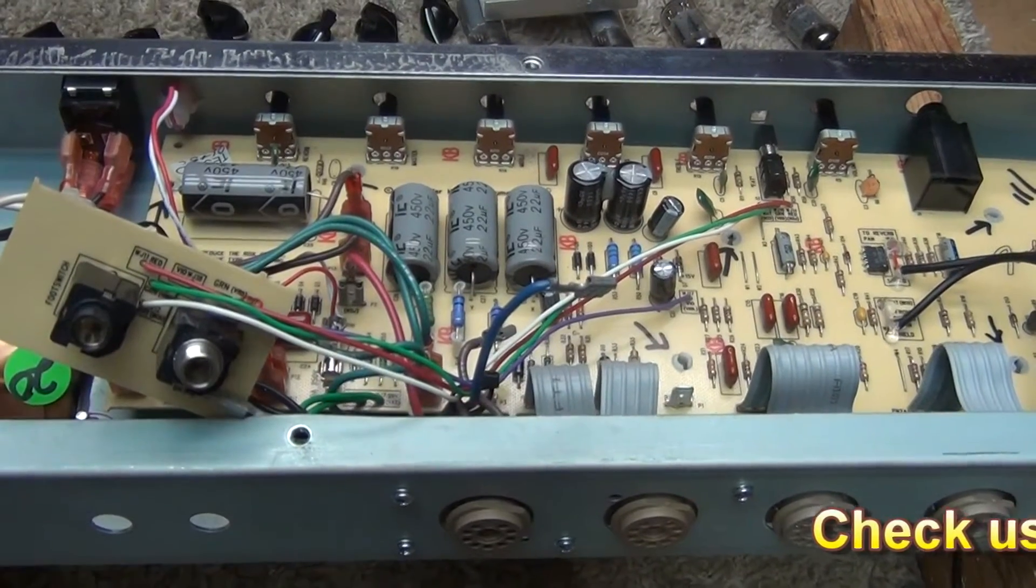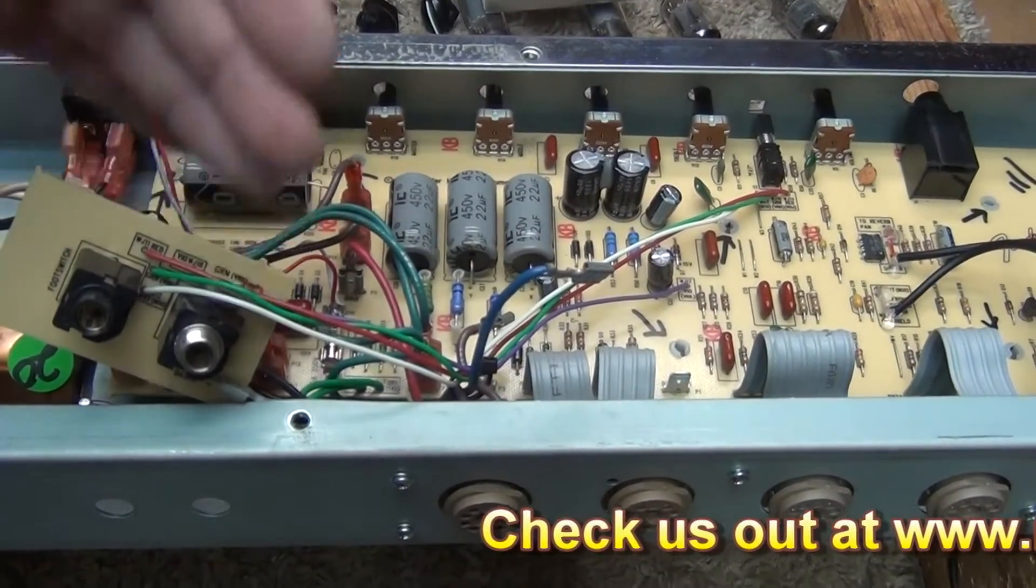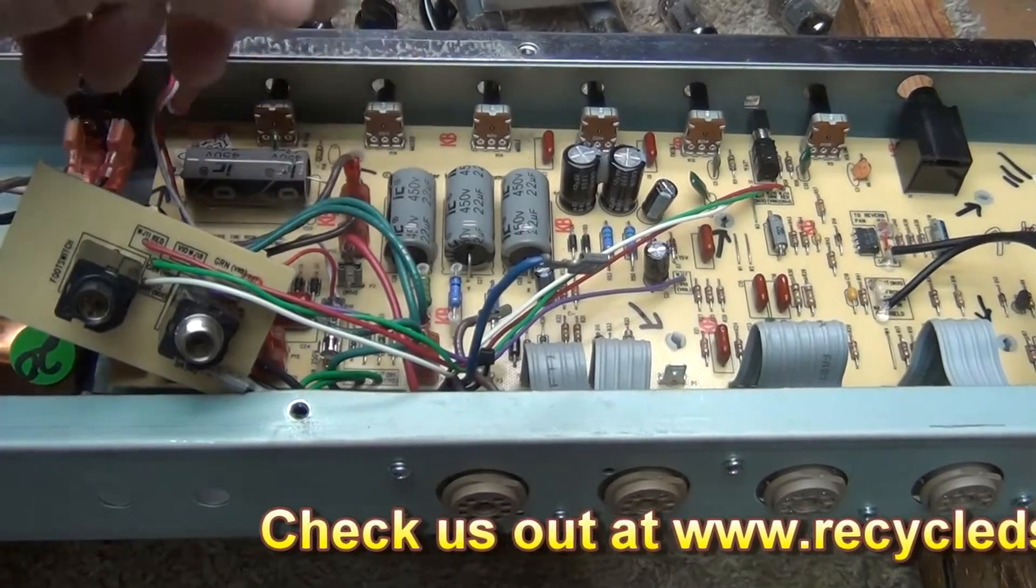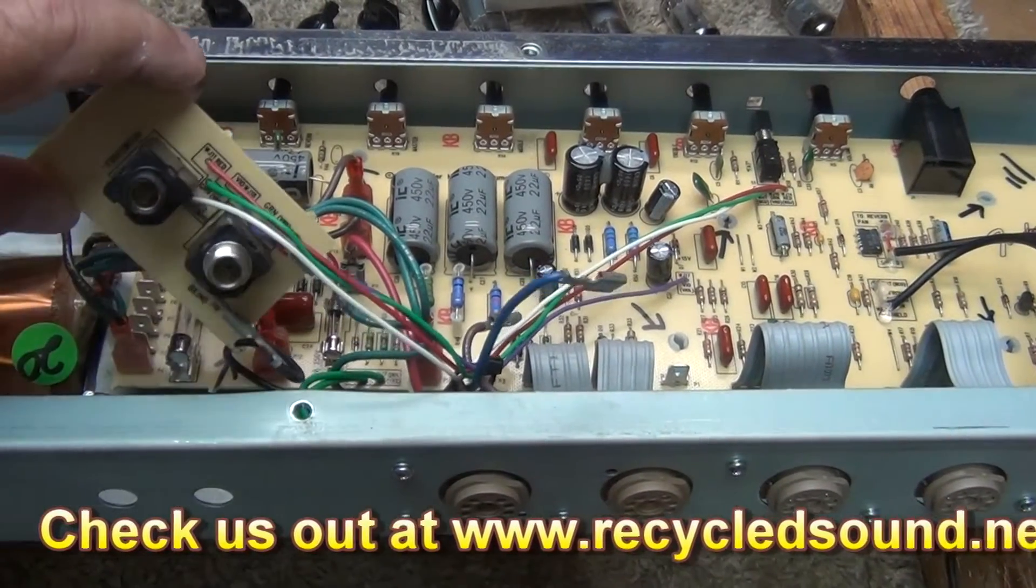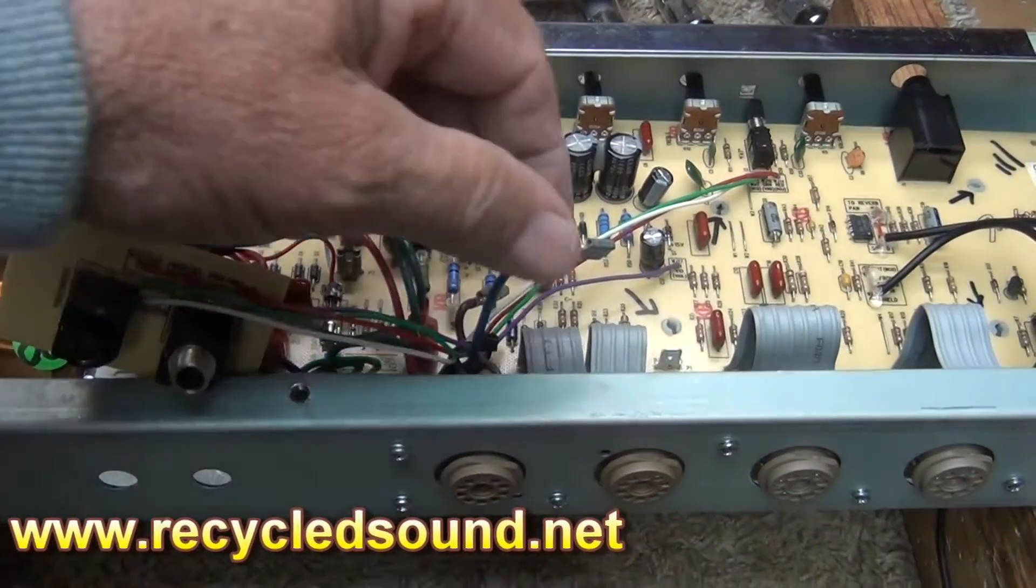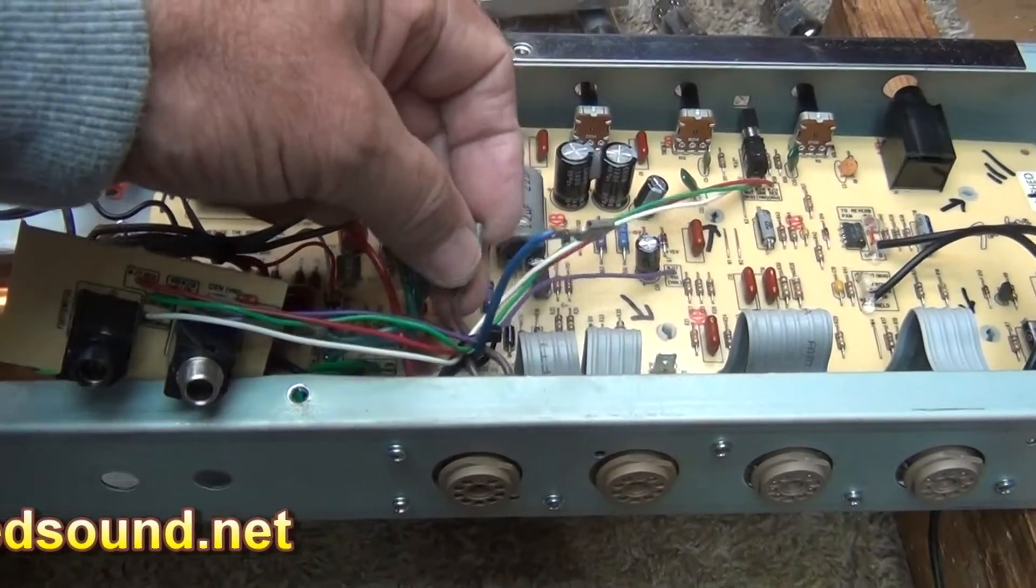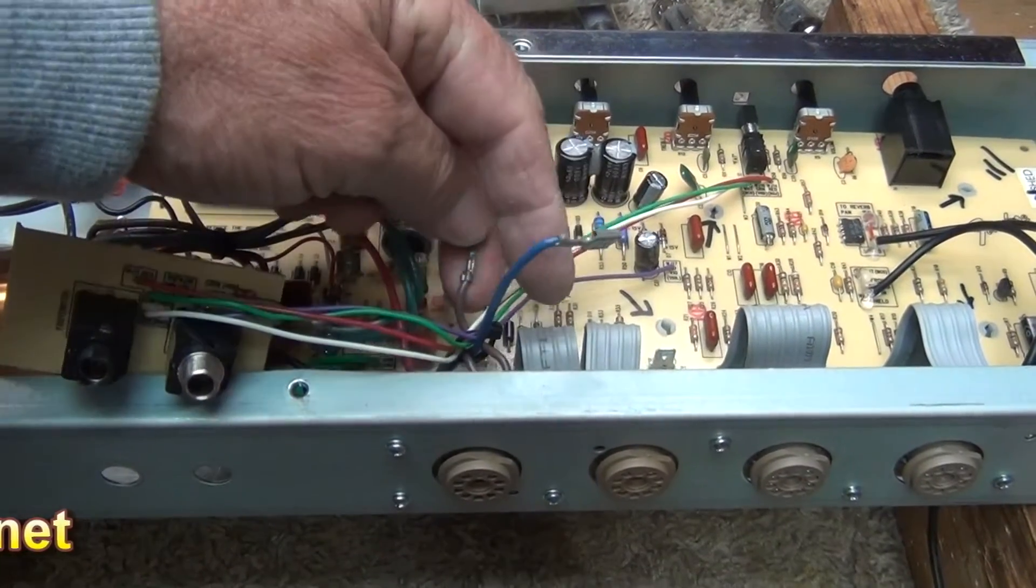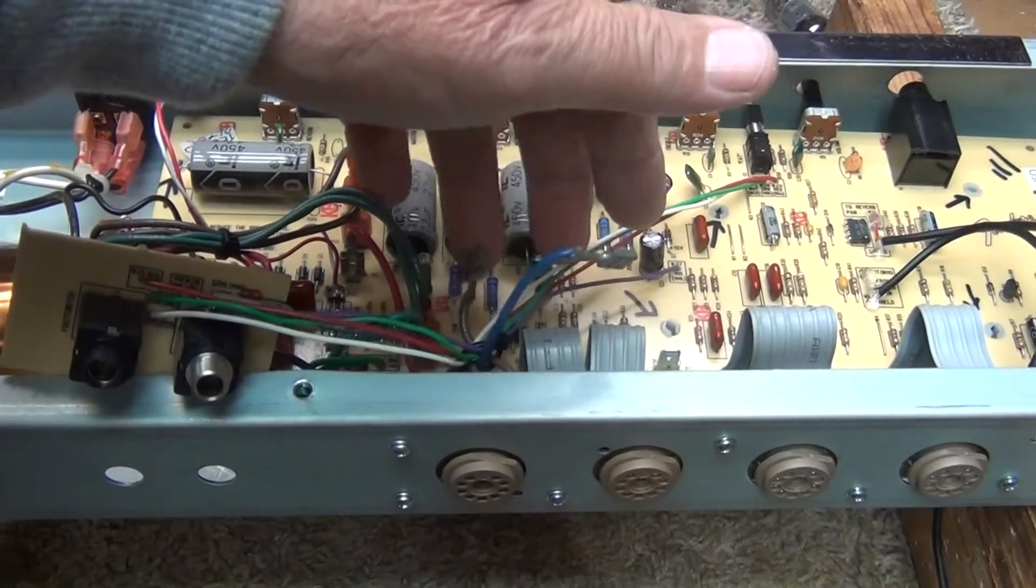In order to give yourself enough clearance to slide the board back and get all the pots to clear the front of the chassis, you'll have to unbolt the speaker board from right here and unplug the blue and the brown wire from the output transformer that are connected to the board.